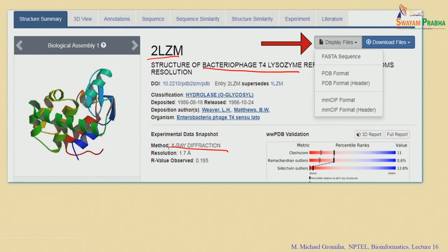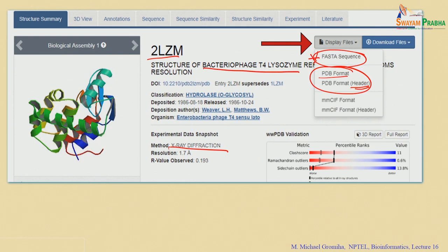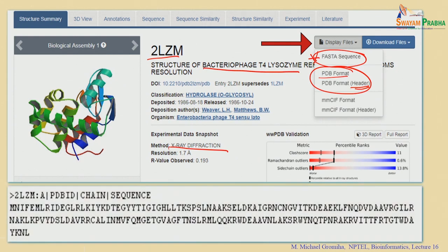There are several other links — you can see the 3D view, annotations, sequence similarities, sequence information, structure information, experiments, and so on. You can get the FASTA sequence and also use data for the full protein. If you click on the FASTA sequence you get the FASTA format, showing the 2LZM sequence with 164 amino acid residues.